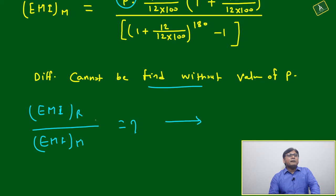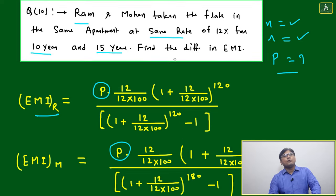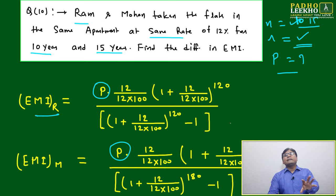Based on that, we can find that EMI of Ram will be how much more than EMI of Mohan. What is the difference here? Here difference will be: n is for one person 10 years, another is 15 years. This rate is same, rate is 12 for both, but for Ram is taking for 10 years and Mohan is taking for 15 years. That is only creating the difference in amount.